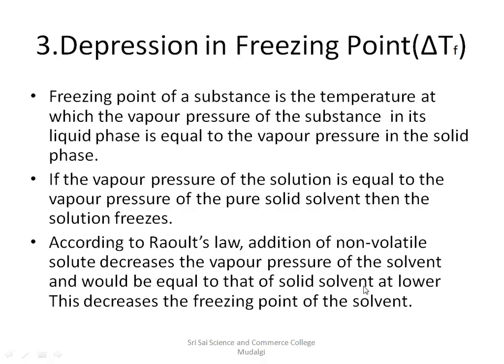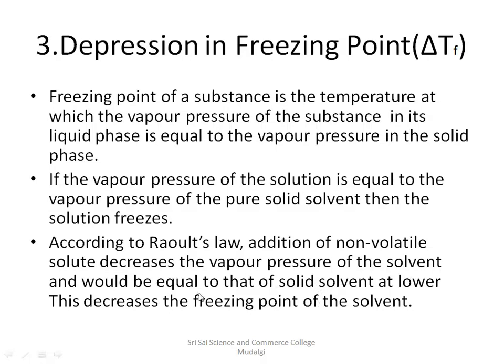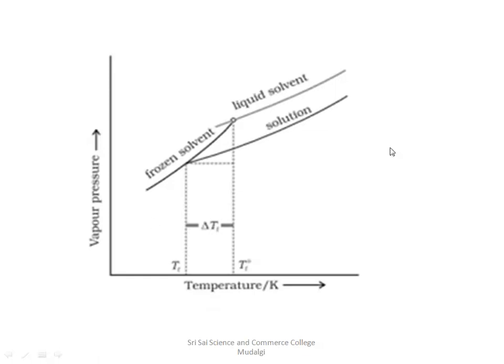Because of the presence of solute particles in beaker B, the vapor pressure decreases, and it will be equal to the solid solvent only at a lower temperature — so the freezing point decreases. This is shown in the graphical representation for depression in freezing point, which is also very important from an exam point of view. The graph is plotted with vapor pressure on the y-axis and temperature on the x-axis, same as for elevation in boiling point.